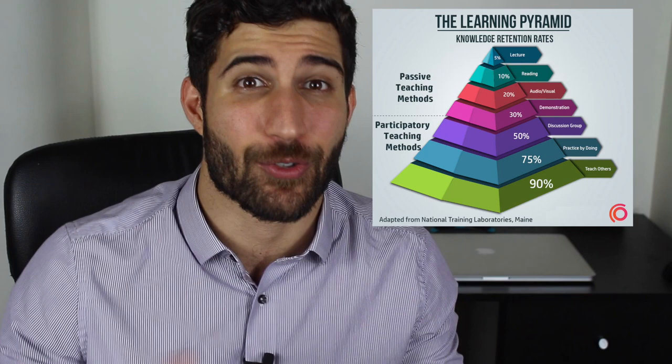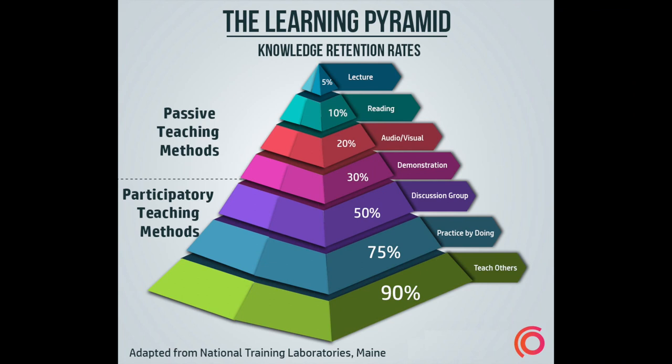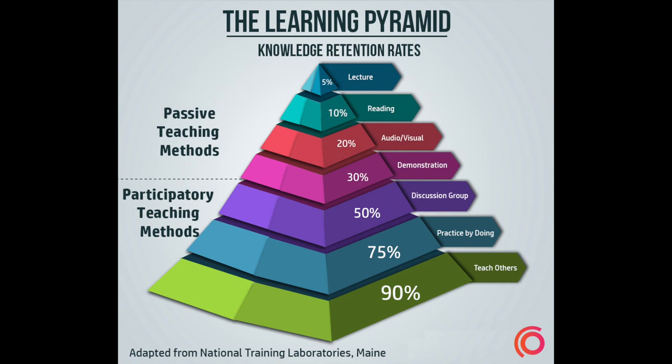So if you were to look at the Edgar Dale Pyramid of Learning, which is basically how much information people retain from what they have learnt two weeks after they've learnt it depending on the method, then it shows you that teaching will help students retain 90% of the information, whilst reading will only be around 10% as you can see here. The best way to learn is teaching in that case.